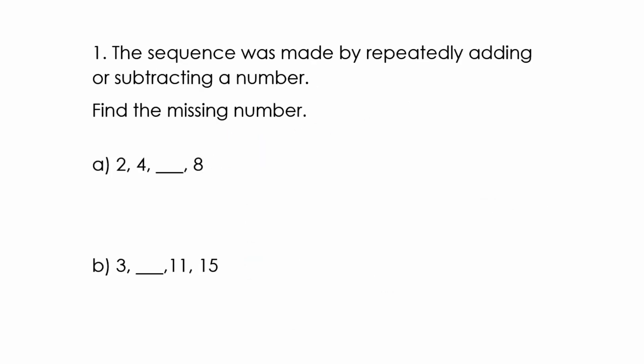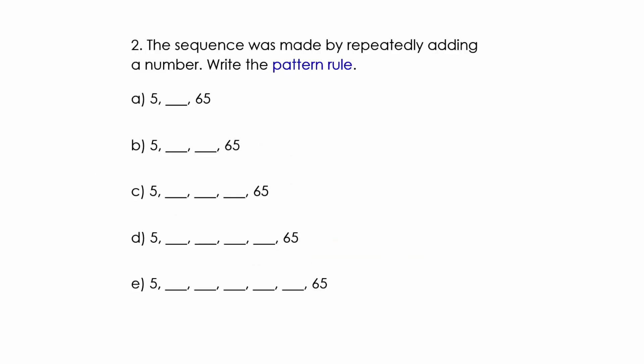Well let's look at this example here. The sequence was made by repeatedly adding or subtracting a number, find the missing number. Well these two go up and this number is higher, so the missing number here is 6, we're adding 2 each time. This is also going up. Now the clue here for me is right over here, there's a difference of 4 or it's going up by 4. So let's see if it works if I put 7 there because 3 plus 4 is 7, 7 plus 4 is 11, that works, you are adding 4.